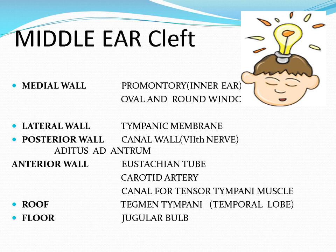Recall the anatomy: the middle ear cleft consists of the Eustachian tube, the middle ear proper, the aditus to antrum, mastoid cavity, and all the surrounding mastoid cells. There are different types of cells including retrofacial cells, petrous bone cells, sigmoid sinus cells, and Eustachian tubal cells — all included in the middle ear cleft.